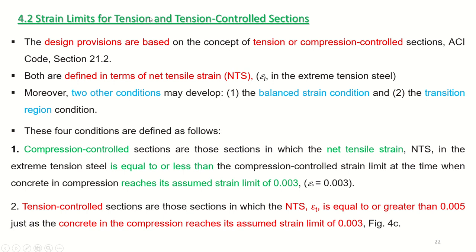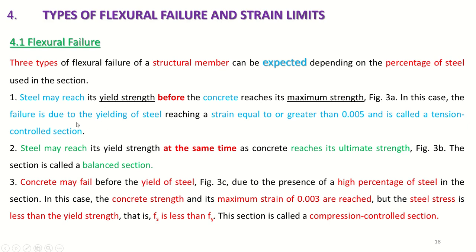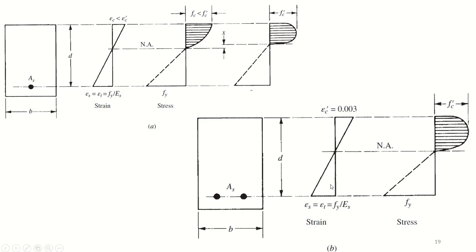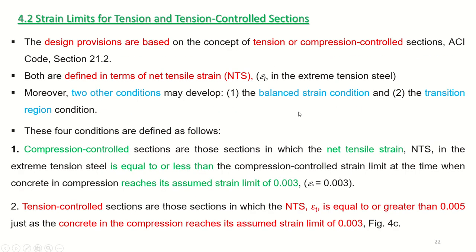The second topic is strain limits for tension and compression control sections. The design provisions are based on the concept of tension or compression control sections given in ACI 21.2. Both are defined in terms of net tensile strain — which is the strain in the extreme tension steel. In addition to the three previously defined conditions, two other conditions may develop: the balanced strain condition and the transition region condition. So these four conditions are defined as follows.